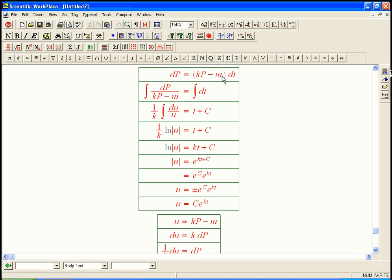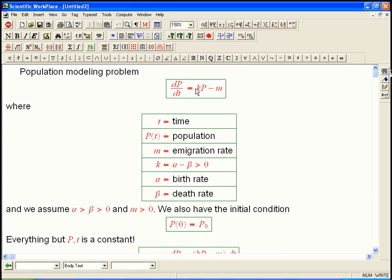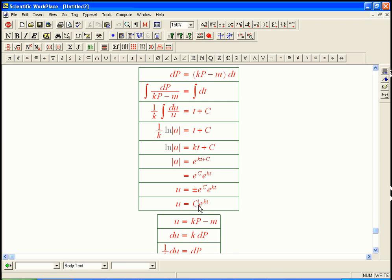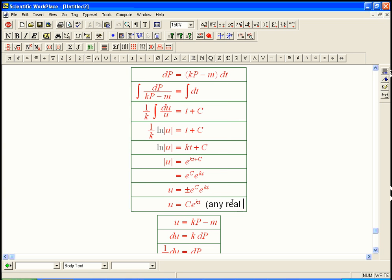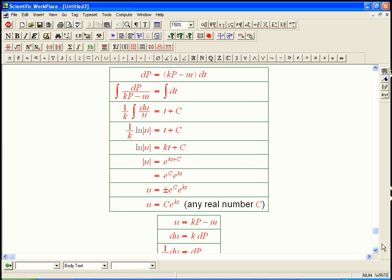But u is kP - m, is here. And that's exactly what can be 0. If kP - m is 0, then, in fact, if kP - m is 0, then this is 0. But if kP - m is 0, then P is a constant. It's just m over k. And that would be 0 as well. So as very often happens with this kind of thing, C actually can be 0. And so I'm just going to emphasize that. Any real number C. Now we're going to actually determine C in a minute because we're going to have an initial condition.